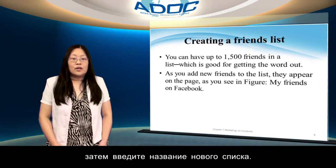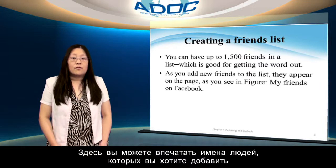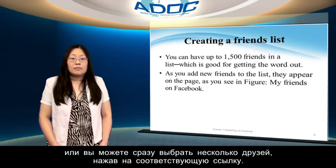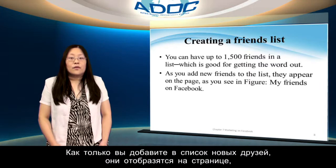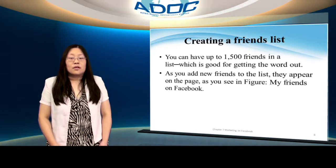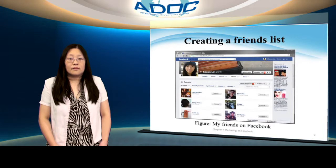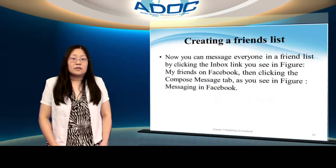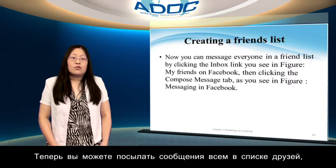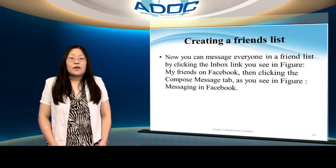To make a friend list, enter the name of the new list. The next step is to add the friends you want. Here you can type the names of the friends you want to add, or you can select multiple friends at once by using the 'Select Multiple Friends' link. As you add new friends to the list, they appear on the page.